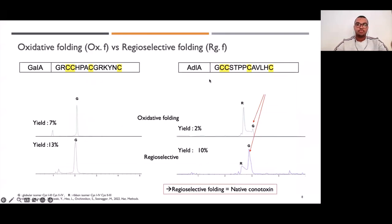If we compare these two approaches for G1A, all the oxidative folding led to the right isomer here, and we can see it matches with the regioselective one. But for AD1A, most of the oxidative folding led to the ribbon isomer. Ribbon isomer is when we connect the disulfide bond between cysteines 1 and 4 and cysteines 2 and 3. But this one is not interesting for us. This is why regioselective approach gives us mainly globular native conotoxins.